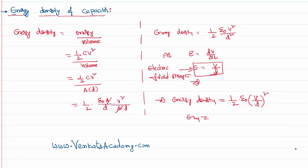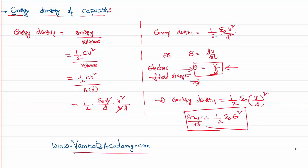Therefore, energy density — energy per unit volume — equals half epsilon naught times (potential divided by distance) squared, which we rewrite as half epsilon naught times electric field intensity E squared. This is the equation we use to solve problems involving energy density of a capacitor: how much energy is packed between the plates depends on the electric field intensity between the plates.